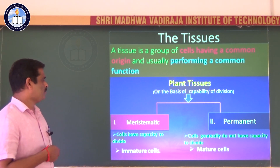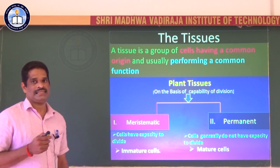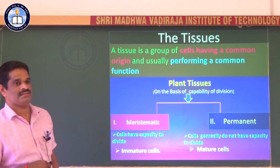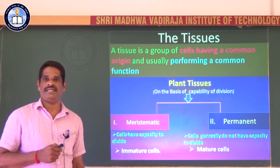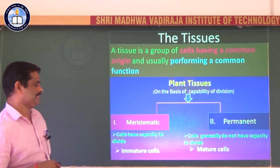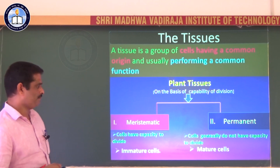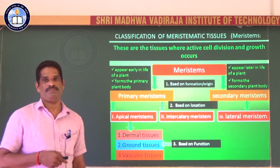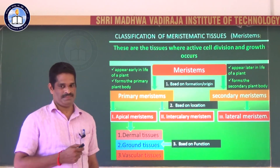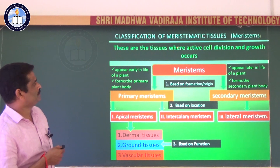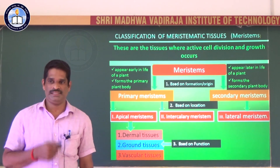Meristematic tissue is formed of meristematic cells that have certain characteristic features: the cells are immature, continuously dividing, and have dense cytoplasm and a prominent nucleus. Meristematic cells through differentiation produce the permanent tissues. In plants, growth is restricted to certain specialized regions of active cell division, called meristems. Meristems are the tissues where active cell division and growth occurs.